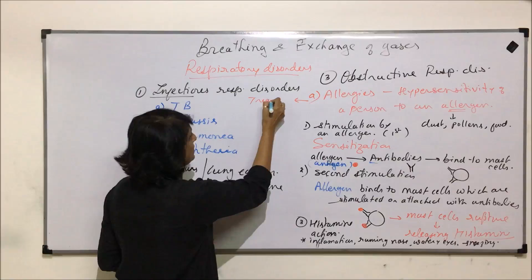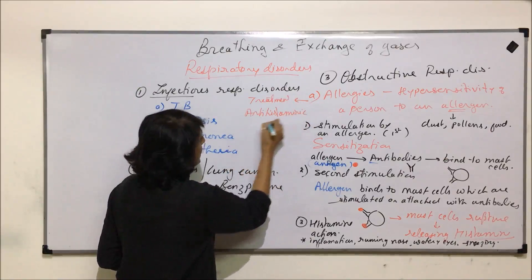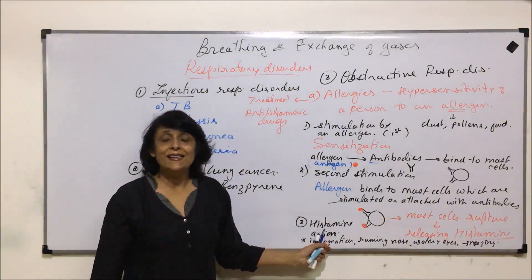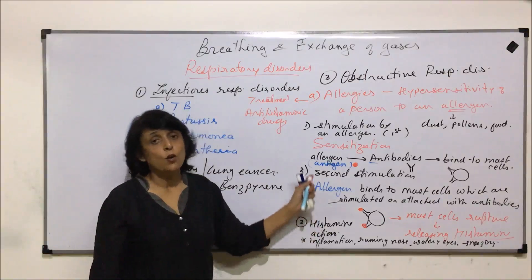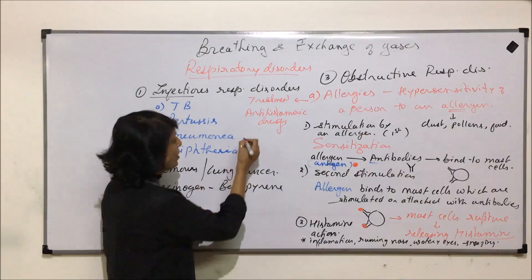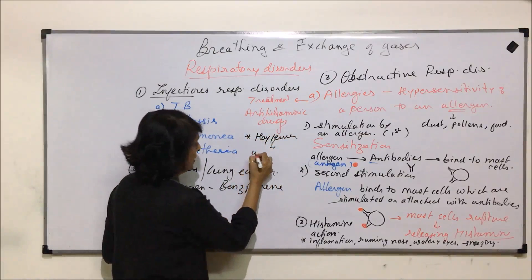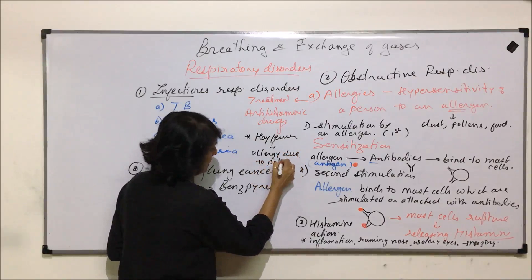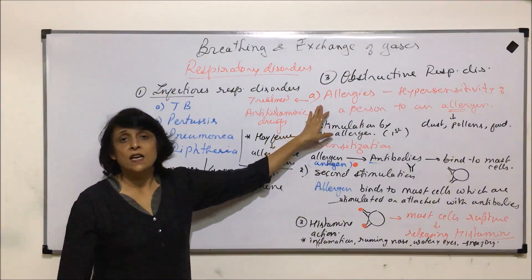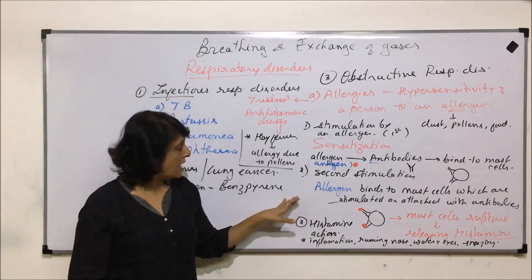For treatment, antihistamine drugs are taken, because all symptoms are caused by histamine — any drug reducing histamine's effect helps cure the condition. One specific allergy worth noting is hay fever, which is allergy due to pollen grains. It has been given a specific name, though it is still a type of allergy.